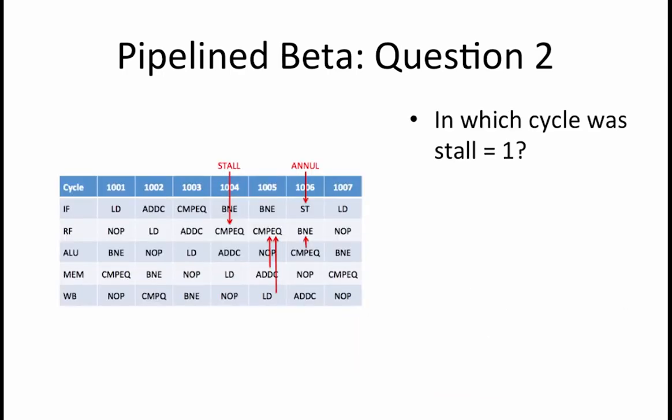Next, we want to identify the cycle in which stall was set to 1 in the pipeline beta hardware. This occurs in the cycle where the stall is initiated, which was in cycle 1004. At the end of that cycle, the instructions that are currently in the IF and RF stage are stalled by not allowing a load of a new value into the instruction registers of that pipeline stage.